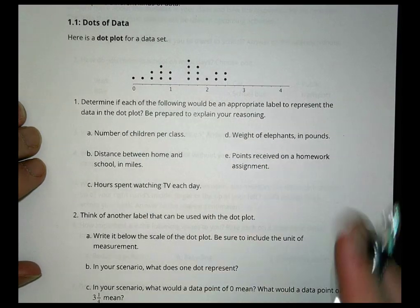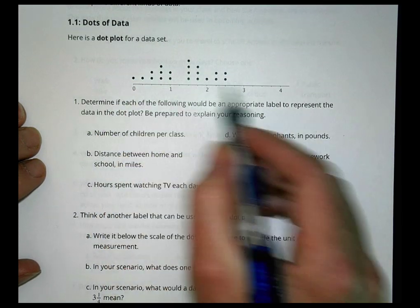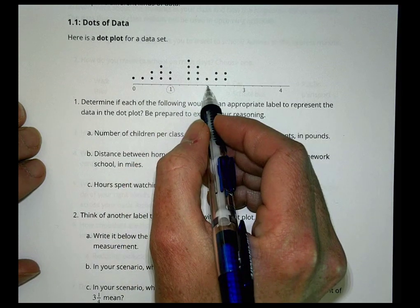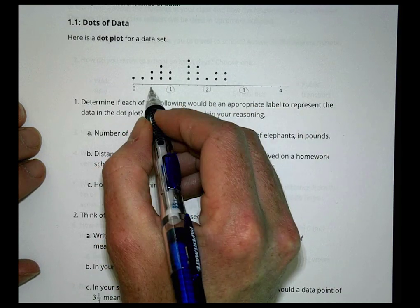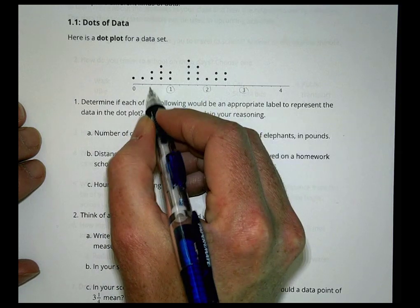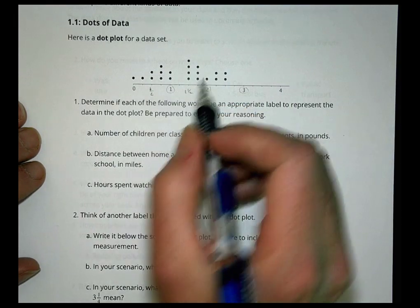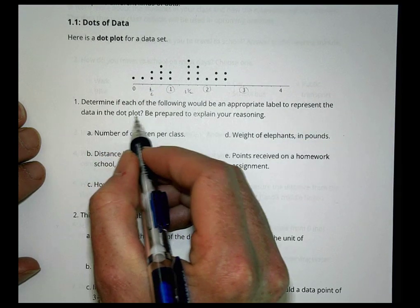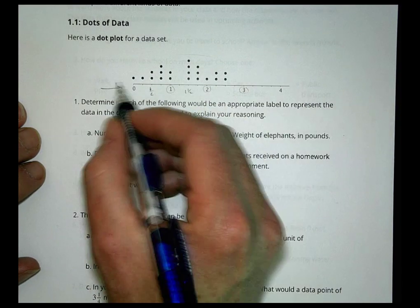First off, we have dots of data. Here's a dot plot for a data set, and we can see numbers from 0 to 4. We have various dots at different locations - we can see the whole number 1, 2, 3, and some that are in between. For example, this must be about a half, and this is a fourth, and three-fourths. So determine if each of the following would be an appropriate label to represent the data in the dot plot - what would be a good label for this dot number line.